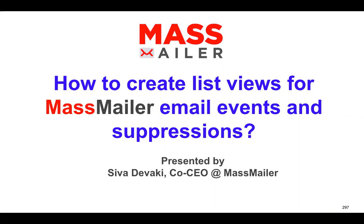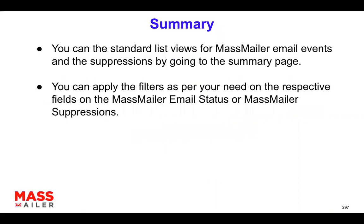I'll talk about how to create the list view so you can identify the specific records for the events and suppressions. It's actually quite easy, but you do need to know certain event types — that's important. You also need to know how to create a list view, which is a standard Salesforce feature. All you need to do is go to the respective summary pages and apply filters on the relevant fields for MassMiller email status or MassMiller suppressions.